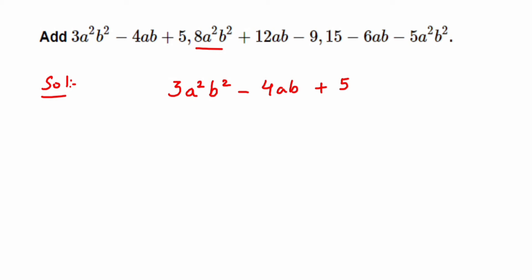8a²b² will come below 3a²b² because they are like terms. Then +12ab goes below -4ab, and -9 comes below the constant +5. In the last expression, we have 15, which is positive, so it goes below -9.